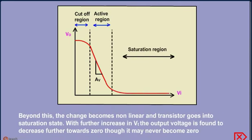Beyond this, the change becomes nonlinear and the transistor goes into saturation state. With further increase of VI, the output voltage is found to decrease further towards zero, though it may never become zero.